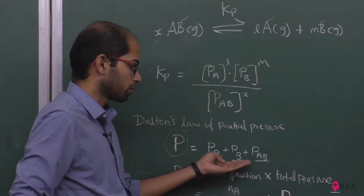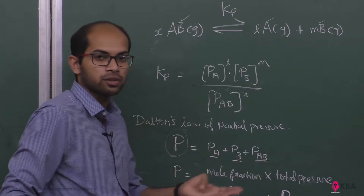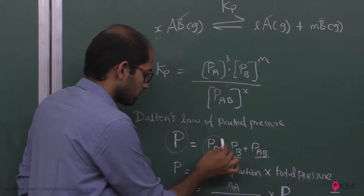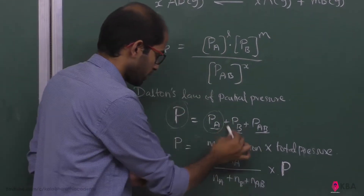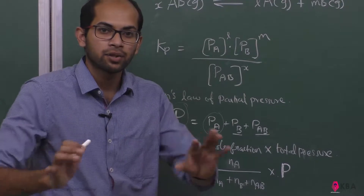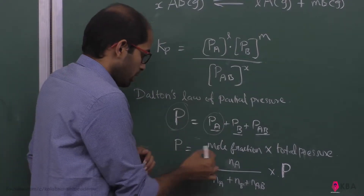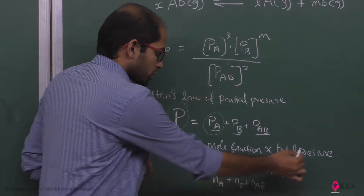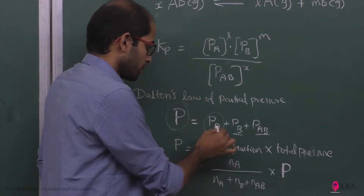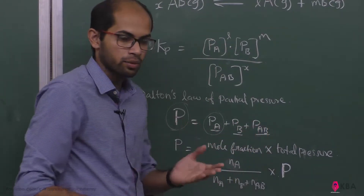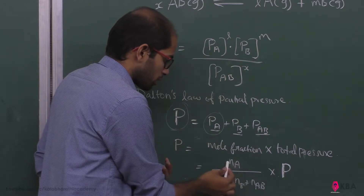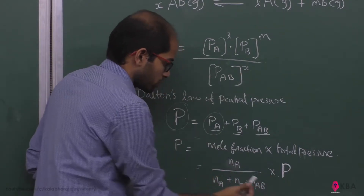Partial pressure of A plus partial pressure of B plus partial pressure of AB equals total pressure P. The partial pressure of each gas equals its mole fraction multiplied by the total number of moles divided by total number of moles, into total pressure P.